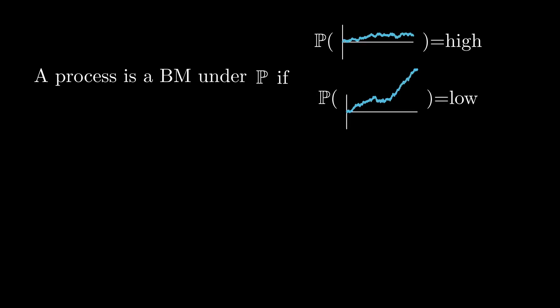In fact, let's rewrite this really quick. We're going to say that a process is a Brownian motion under P if the probability of looking flat is high and the probability of going up one direction is low.